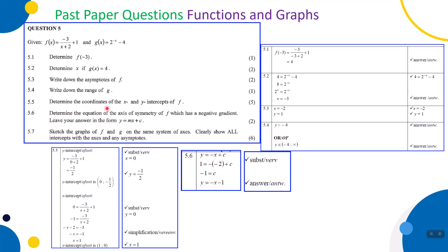5.5, five marks: determine the x and y intercepts of f. For the x-intercept, make y = 0. So 0 = -3/(x+2) + 1. Move the constant: -1 = -3/(x+2). Cross multiply: -x - 2 = -3. Add 2 to both sides: -x = -1, therefore x = 1. So the x-intercept is at (1, 0).